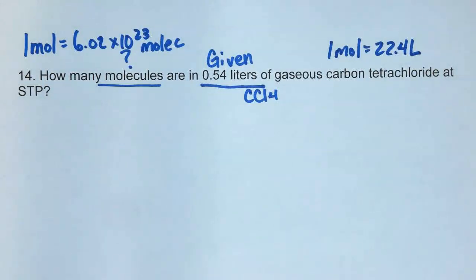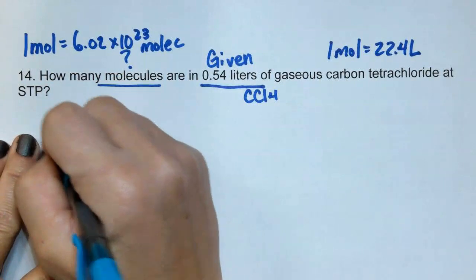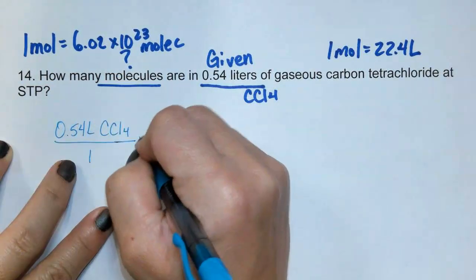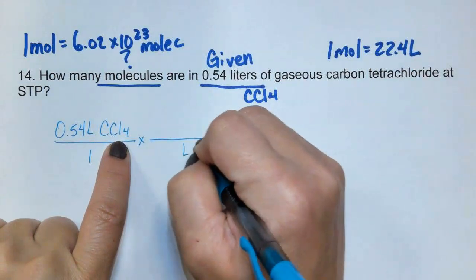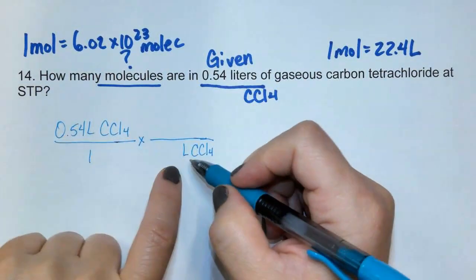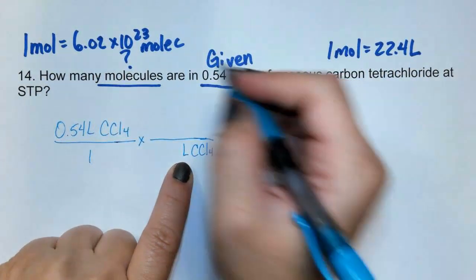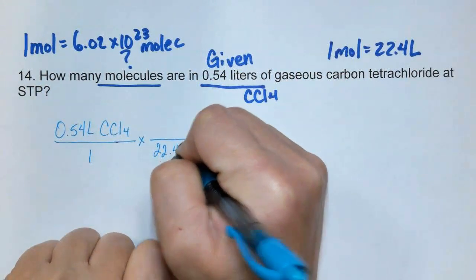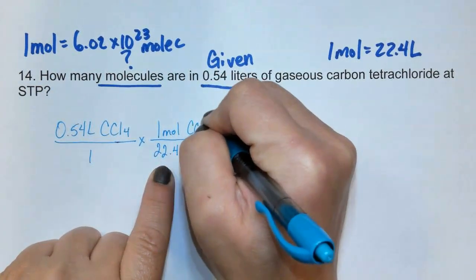So now let's set up the problem. You take your given, which is 0.54 liters of CCl4, and put it over 1 times draw a line. Bring down liters of CCl4, and do not bring down the number. Since I want liters, I'm going to use this. 22.4 liters equals 1 mole, so I'll put the 1 mole on top of CCl4.